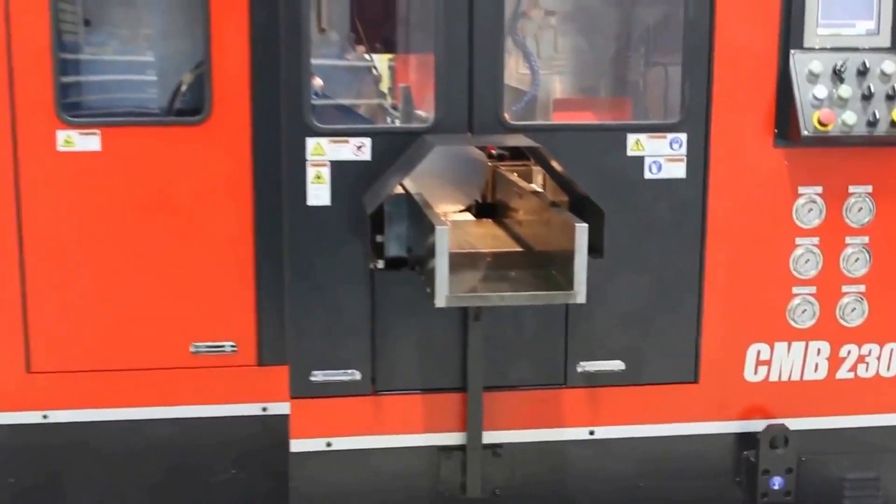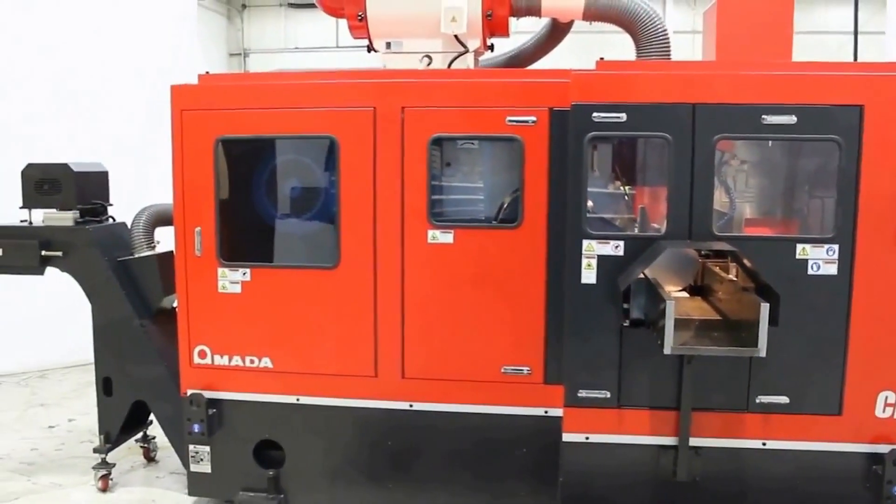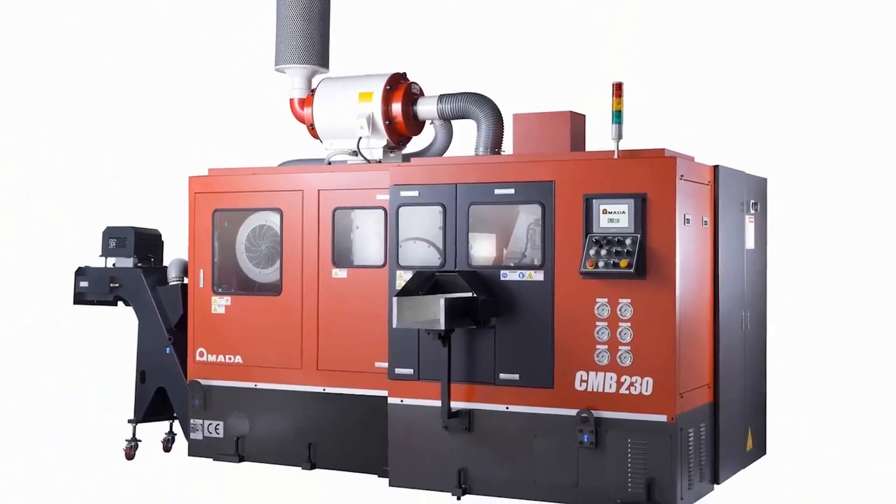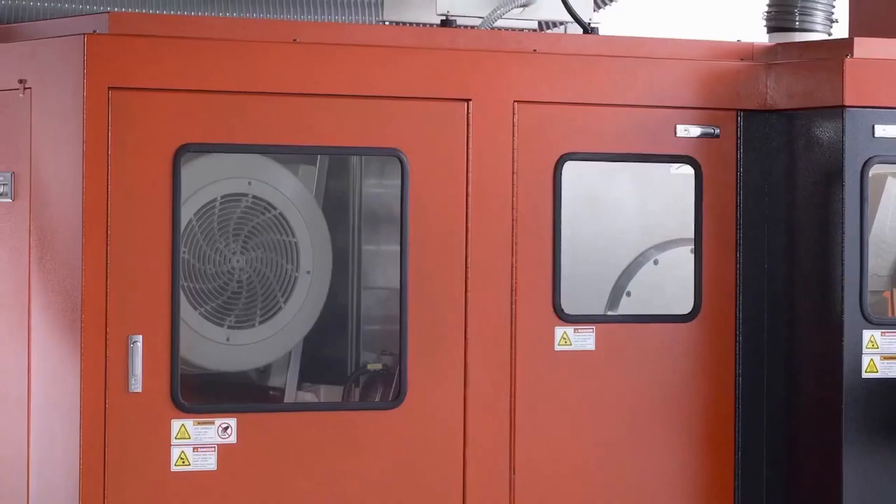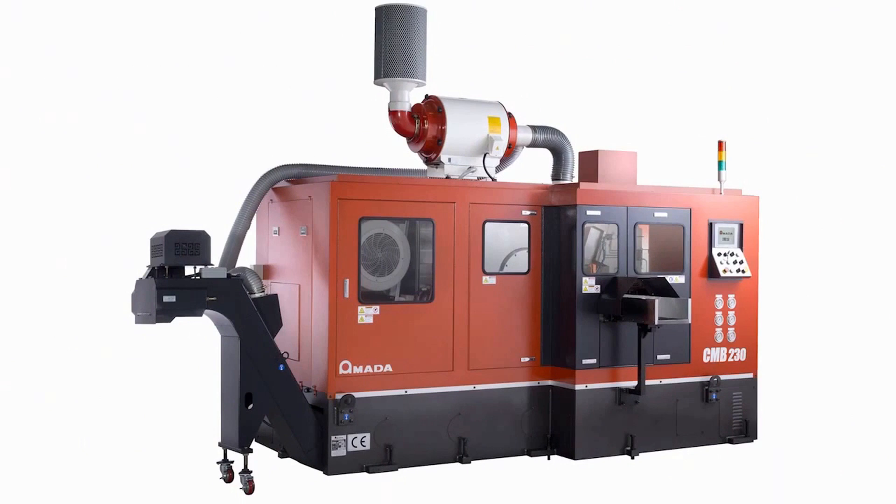Amata has a long and respected history with metal cutting saws. The CMB230 machine is a machine of choice for those customers that require high production and accurate cutting from a circular saw. The CMB230 circular saw is another example of Amata's engineering and innovation to increasing sawing productivity.